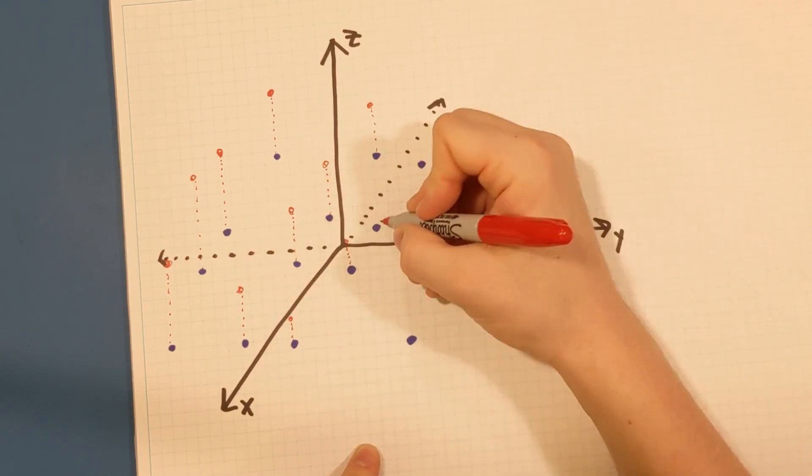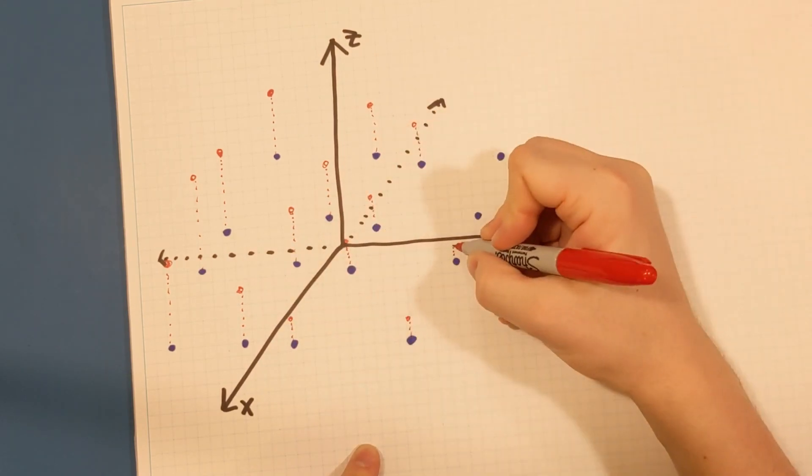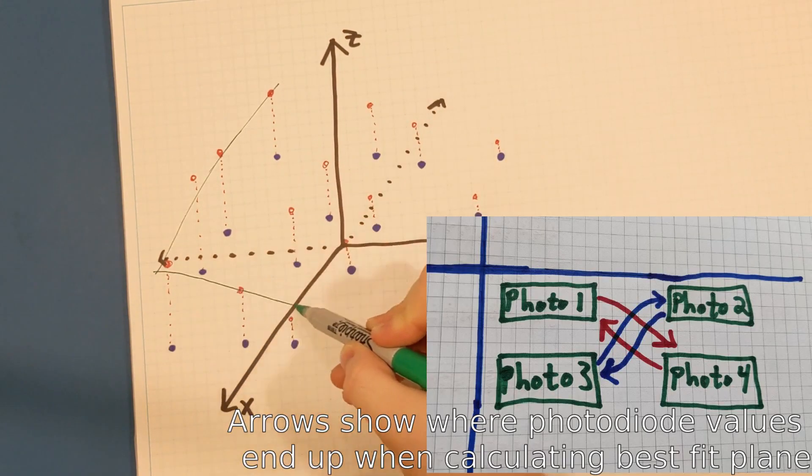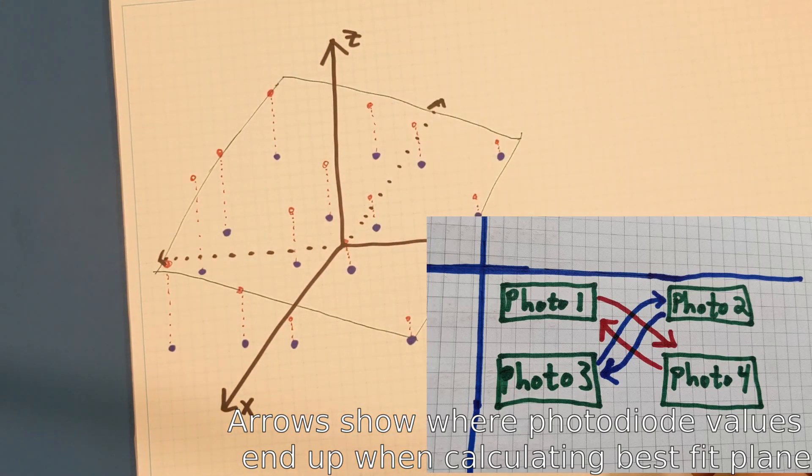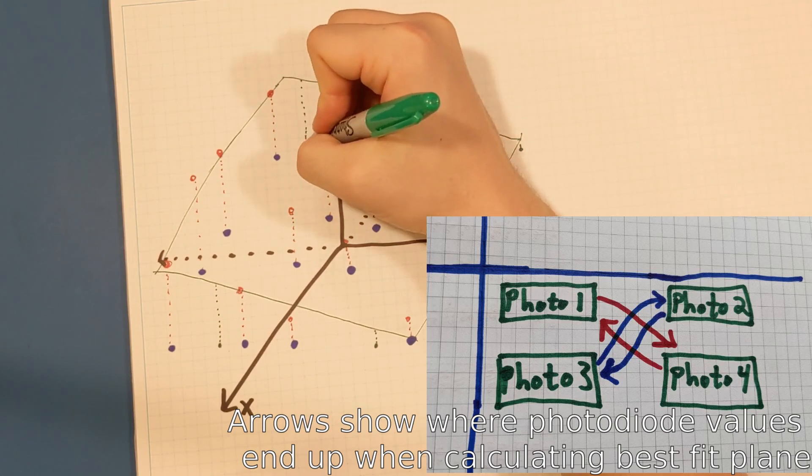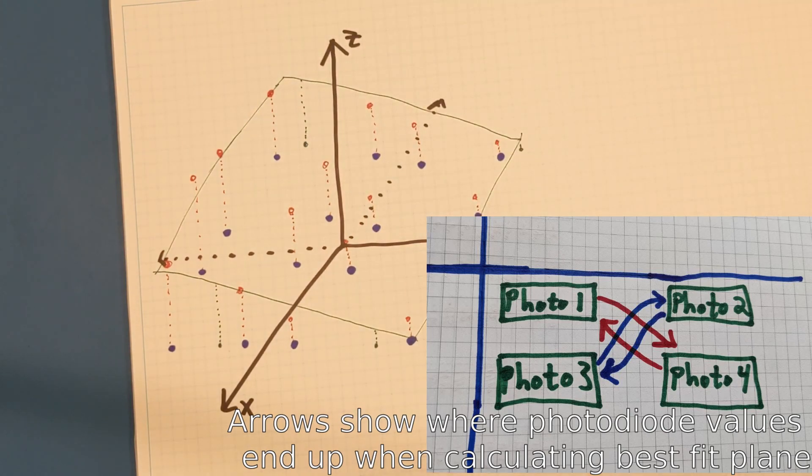In order to get this plane, I actually remap the photodiodes. The lowest light point here would actually correspond to the photodiode closest to the 3D printed shade, so they actually get flipped. And this is in order just for the linear algebra to work out better.